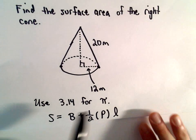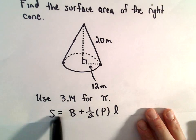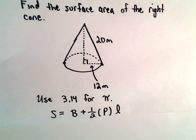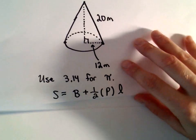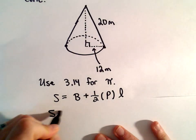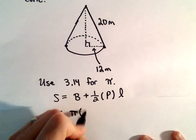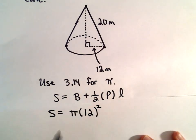So we're going to approximate pi by using 3.14. Again, our formula is the same. The only thing that's going to be a little bit different here, to calculate the area of the base, since it's a circle, we would use pi times the radius squared